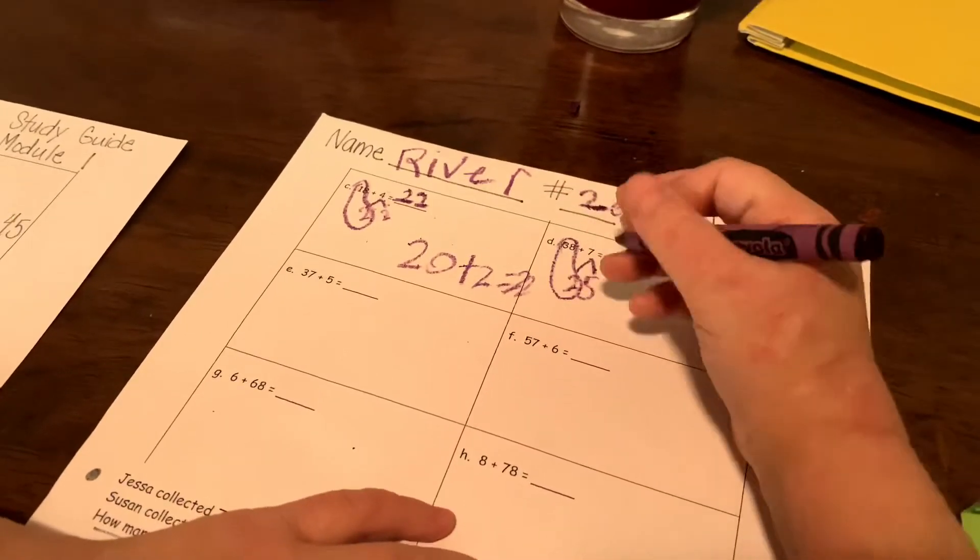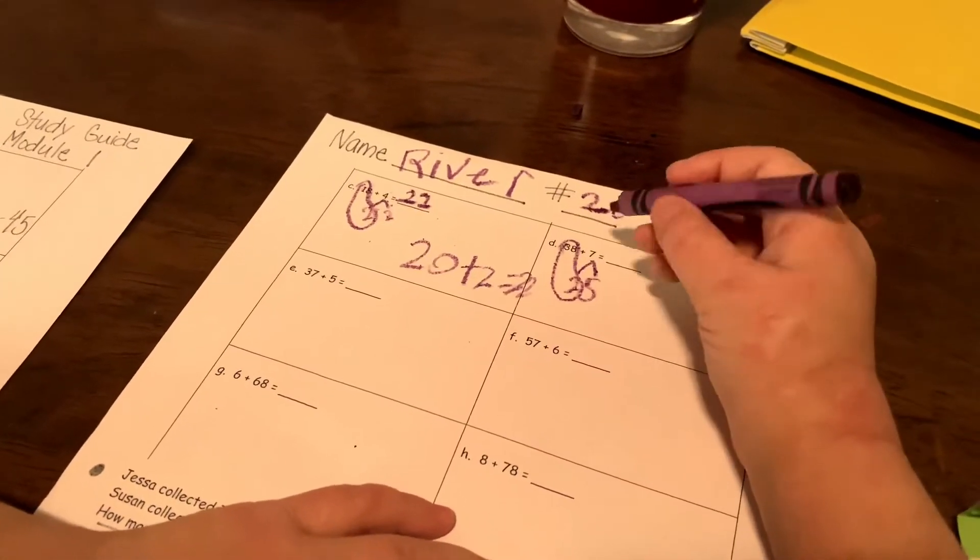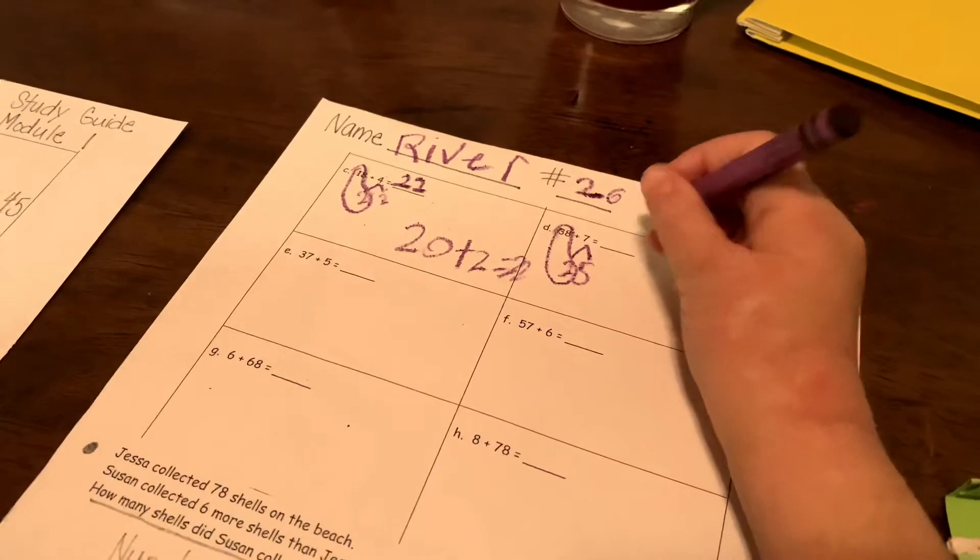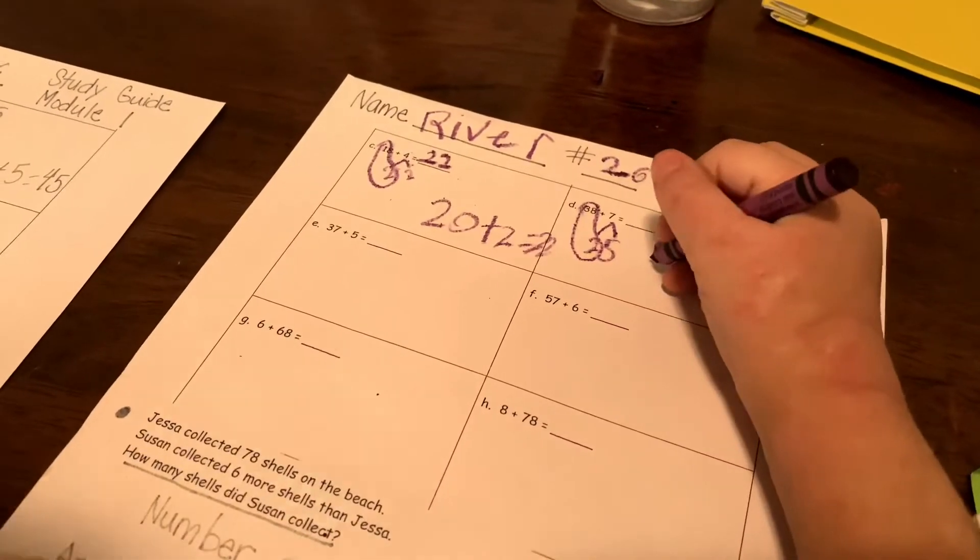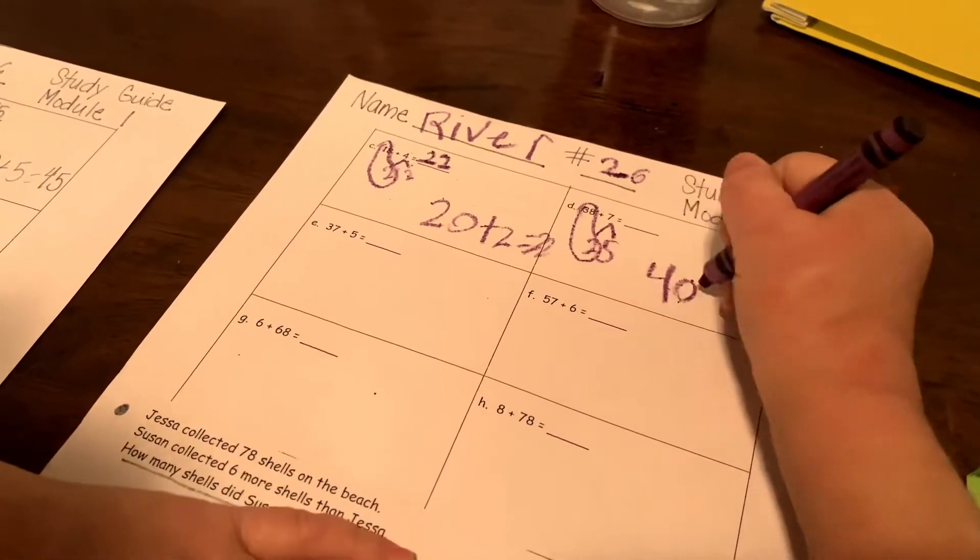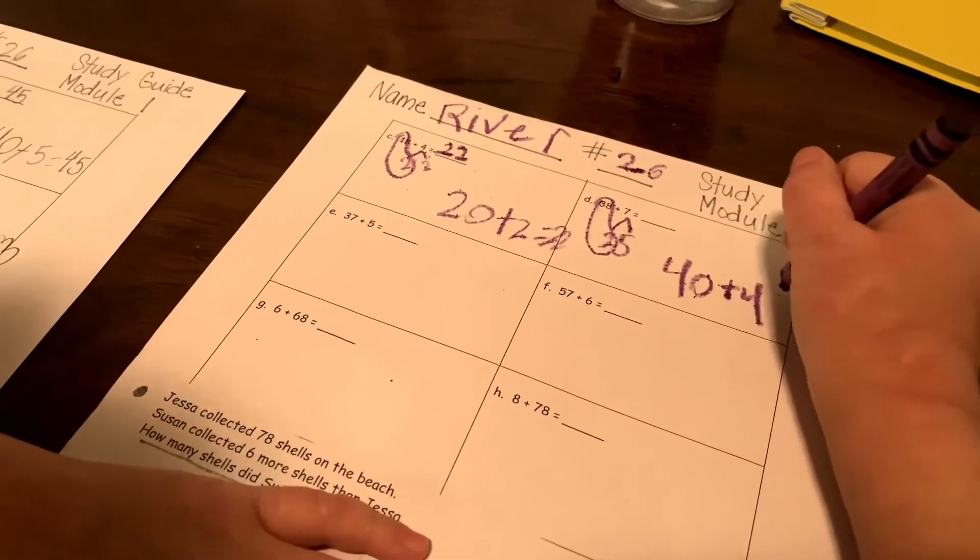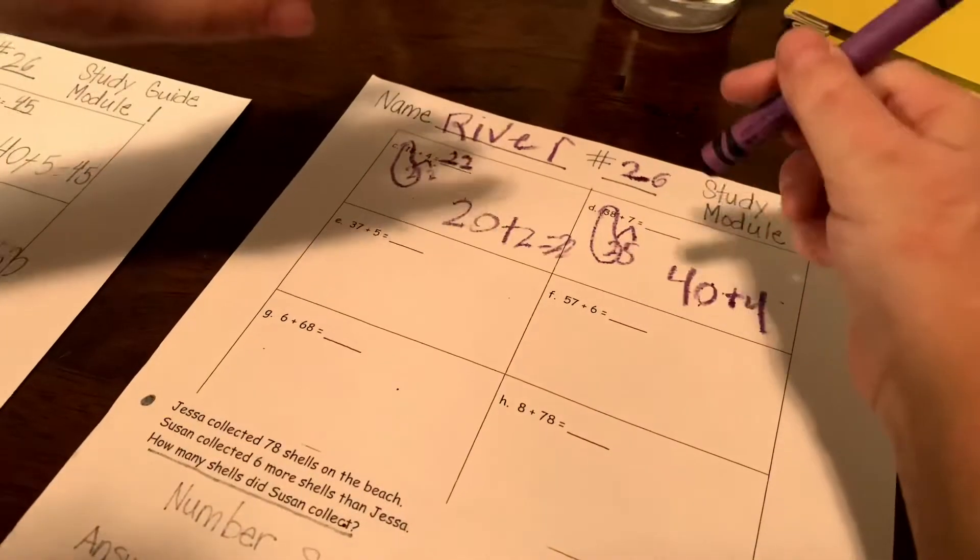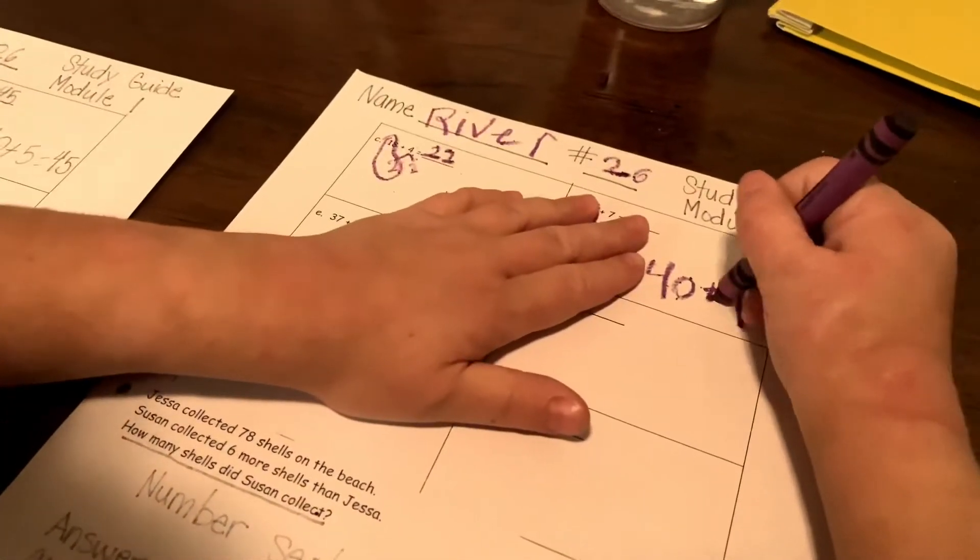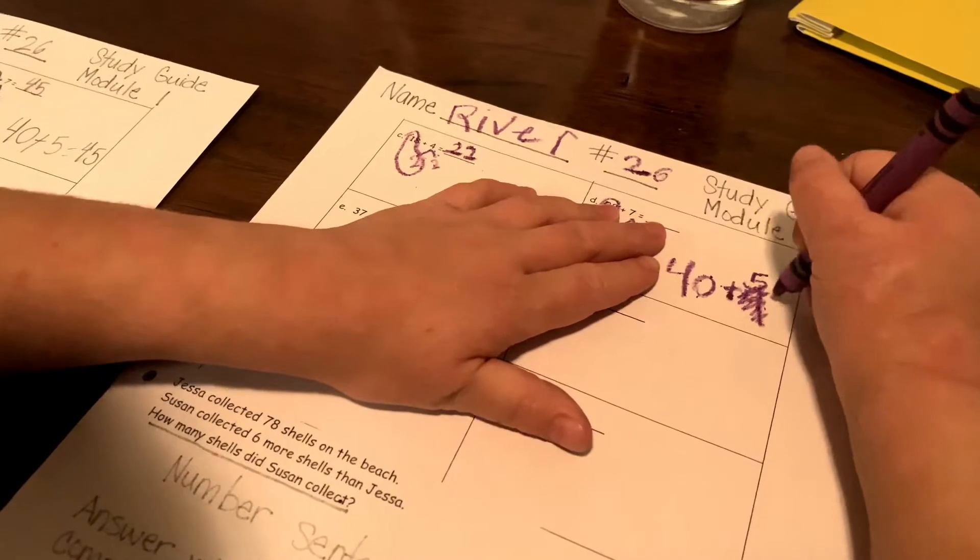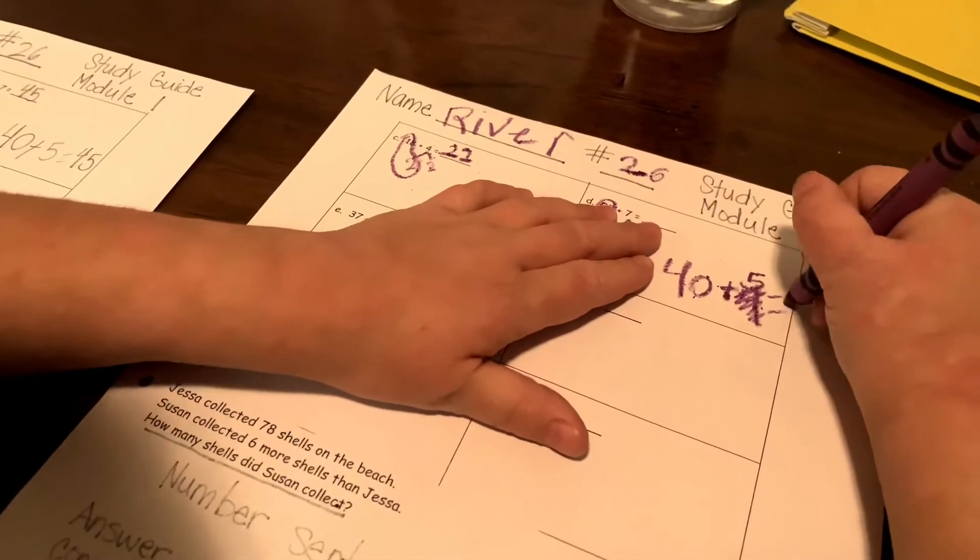And then... then you put 40 plus... wait, just five, right? There's not an eraser on that crayon. Yeah, okay. So then you add 40 plus five and that gives you your answer.